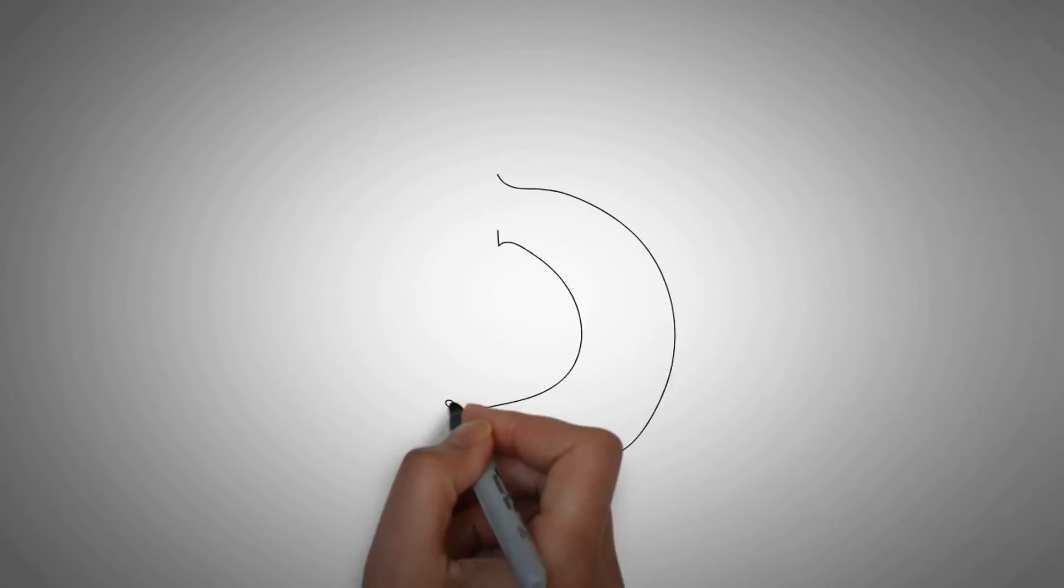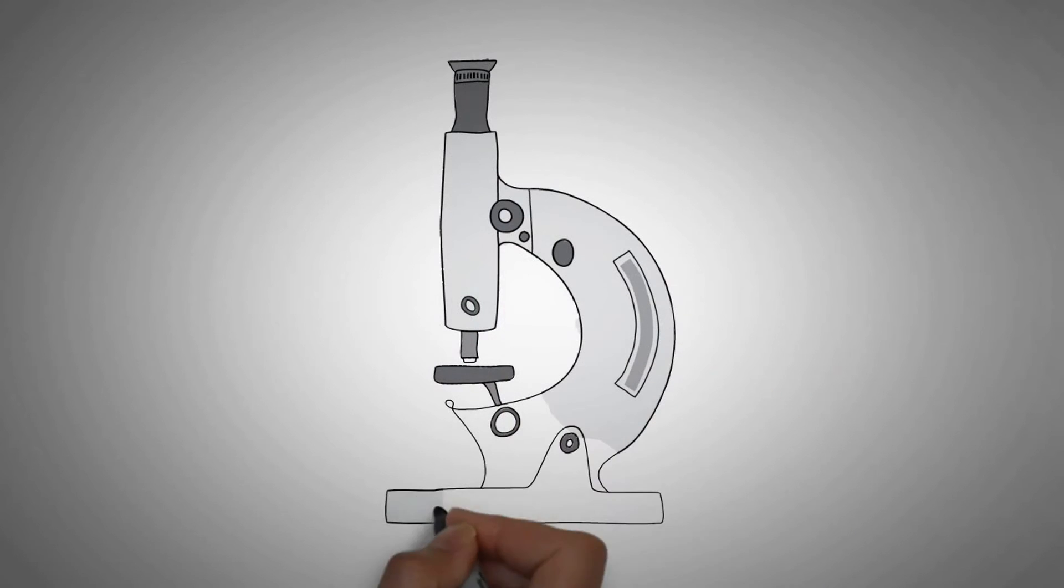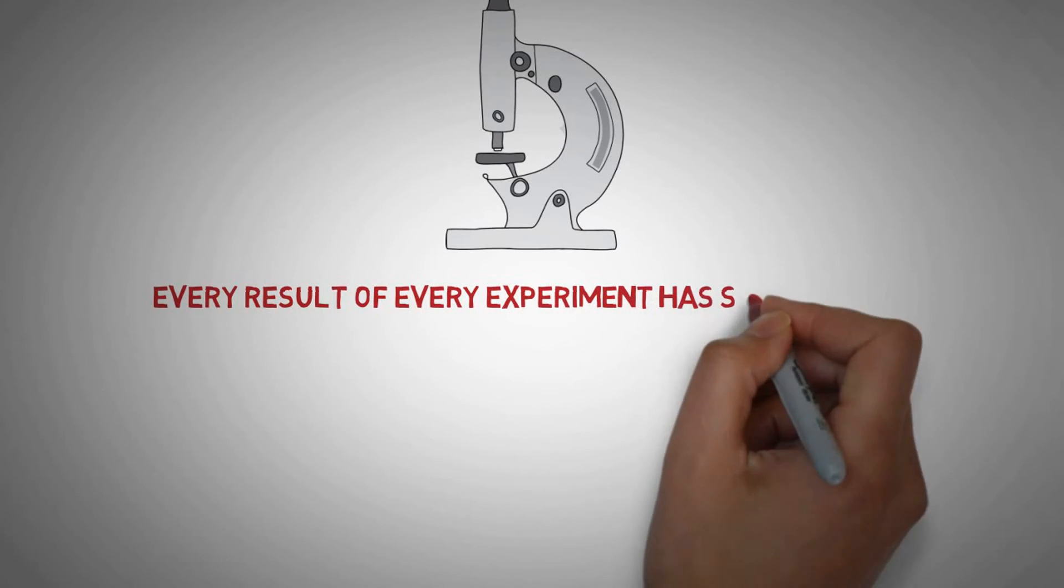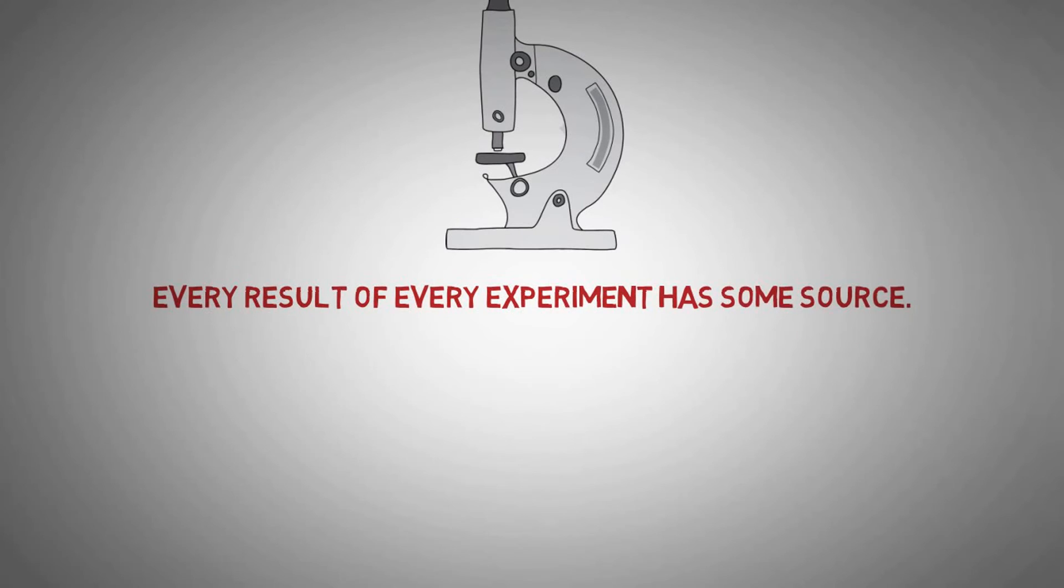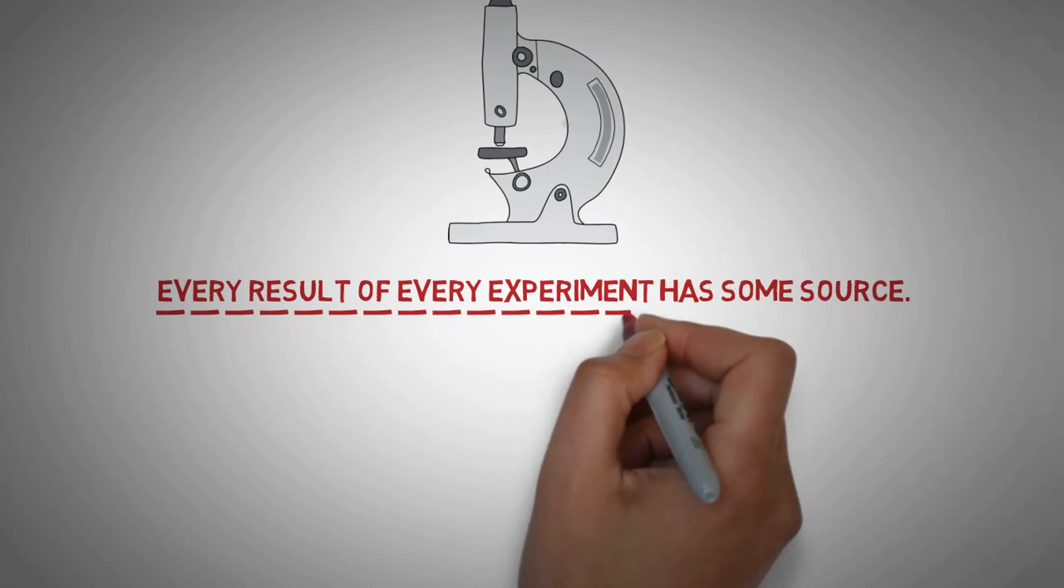Moreover, the principle of dependence is supported by every single scientific experiment involving cause and effect. In each case, the previously imagined results of the experiments have some source. There is therefore no scientific principle or discovery that has as much empirical confirmation as the dependence principle.